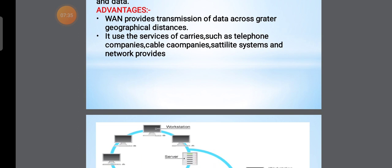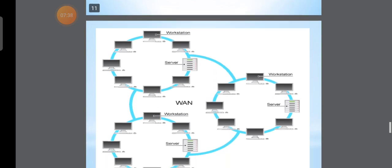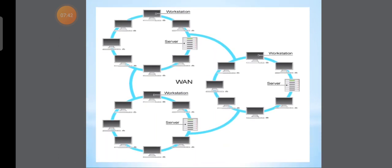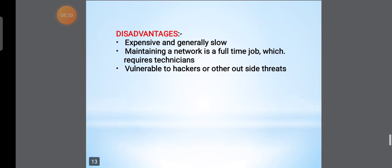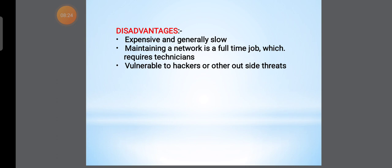In a WAN, a number of LANs are connected — LAN one, LAN two, and LAN three are all connected to one WAN network, with many systems connected across this network.